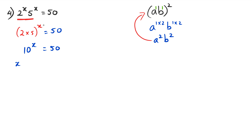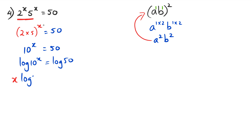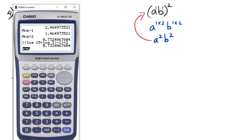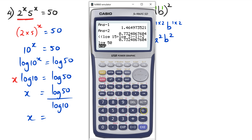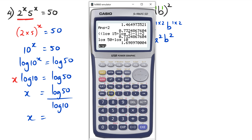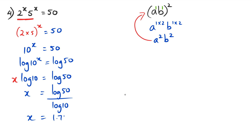Now taking log of both sides: log of 10 to the x equals log 50. Bringing x to the front: x log 10 equals log 50, so x equals log 50 divided by log 10. Since 10 squared is 100, x should be less than 2 — and indeed log 50 divided by log 10 equals approximately 1.70.